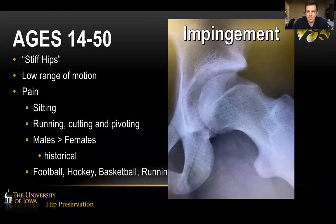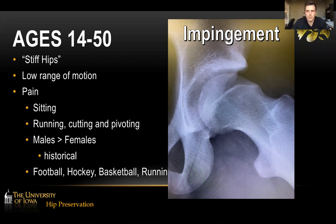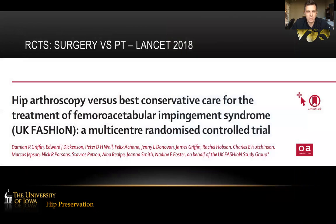The main condition we do see is impingement — it's more common than dysplasia. We see these as low range-of-motion hips with pain in sitting, running, cutting, and pivoting. Historically males had this issue more commonly than females, but with increasing female participation in sports, the numbers are becoming more equal. We see them in contact and high-flexion sports like hockey, football, basketball, track, and dancing.